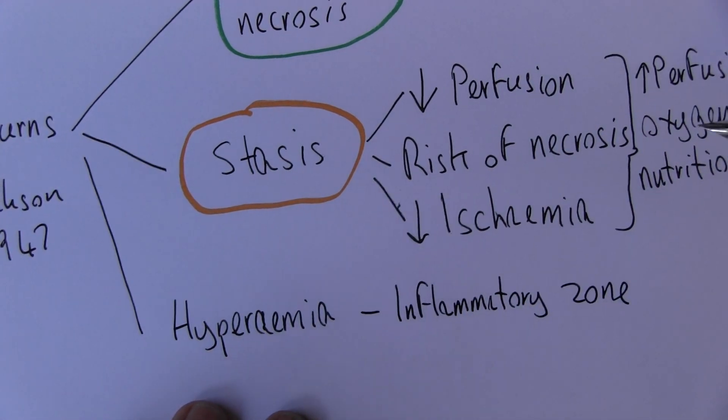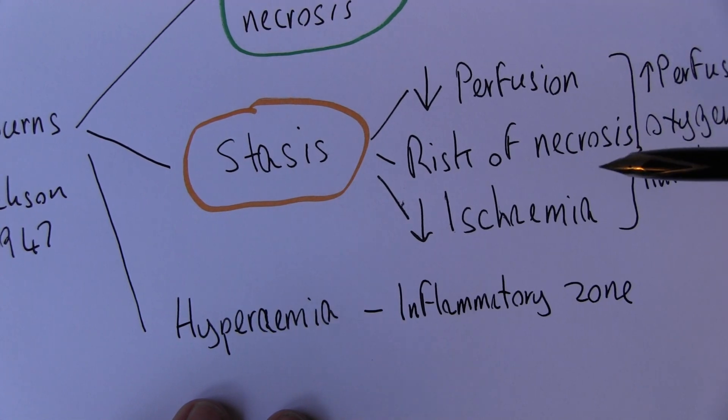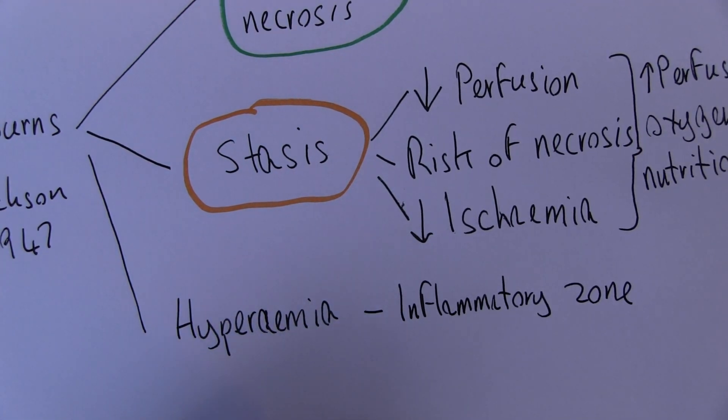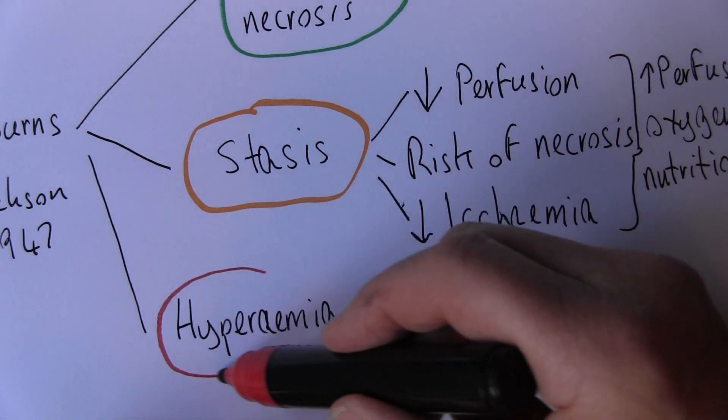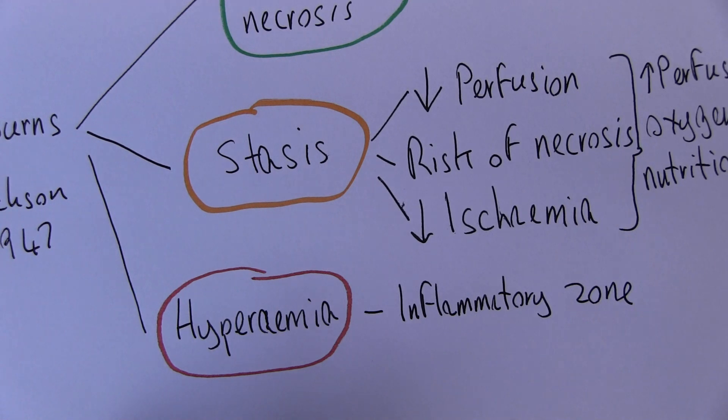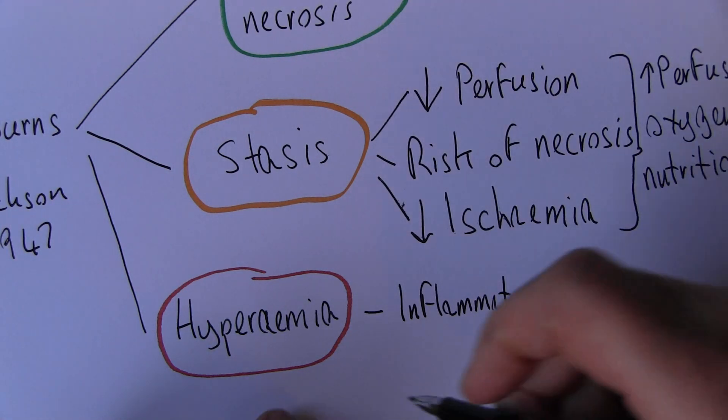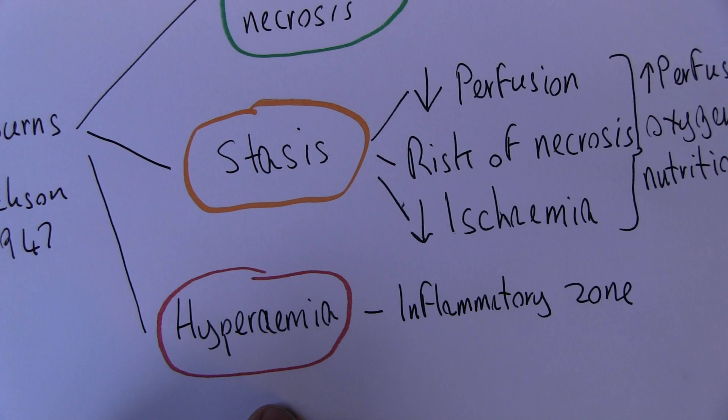It's a result of the effect of the inflammatory cytokines, and in the diagram we drew that as red. So the inflammatory zone actually has an area of increased perfusion.